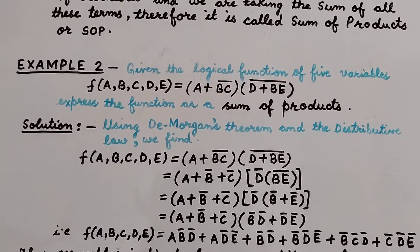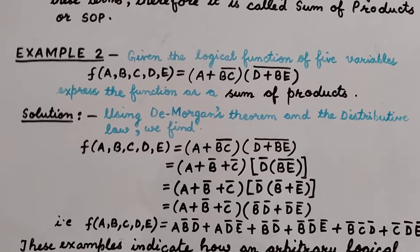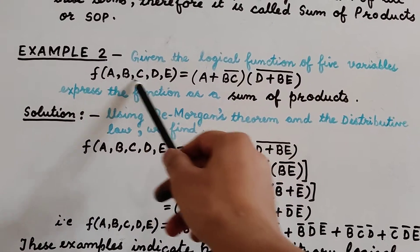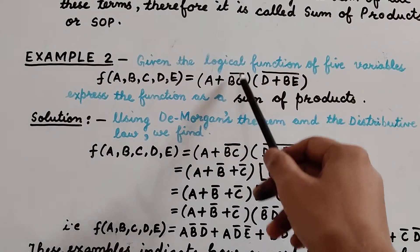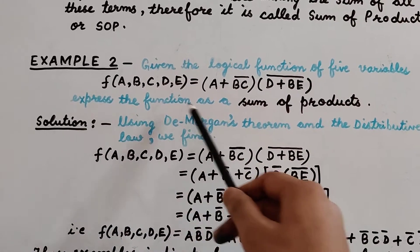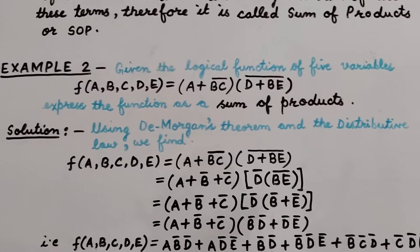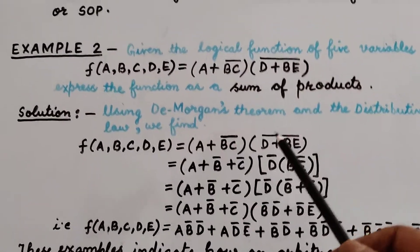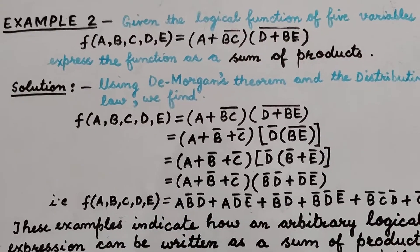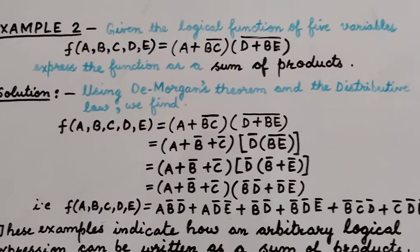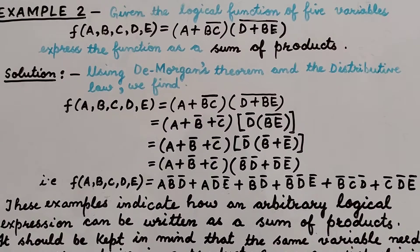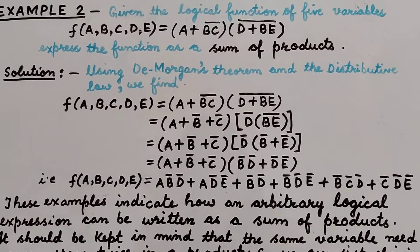In Example 2, we are given a logical function of 5 variables: F(A, B, C, D, E). Its value is equal to (A + BC complement) multiplied by (D + BE) whole complement. We have to express this function as Sum of Products. Here we have complement terms over a number of variables, so we will need to use De Morgan's theorem as well as the distributive law.